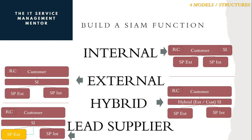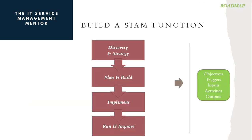The lead supplier model has the customer with retained capability, a service integrator layer, and then a service provider layer, but one of those service providers is also the service integrator — a lead supplier that is not only a service provider but also a service integrator. It's really important to double-check that they genuinely have that service integration capability. To make it happen, you need to follow four steps: discovery and strategy, plan and build, implement, and run and improve. Each phase has a number of objectives, triggers, inputs, activities, and outputs that will help you go from discovery and strategy right through to run and improve.